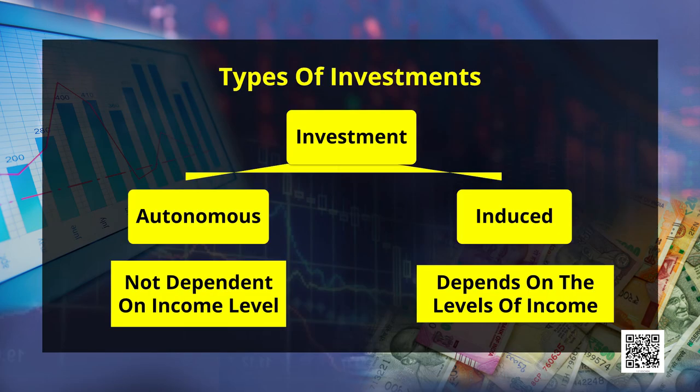To derive aggregate demand, the formula is: AD = Consumption + Investment. When we derive AD, it is always parallel to the consumption curve because the difference between them is investment, which remains constant at all levels. So generally AD will be an upward-sloping curve parallel to consumption. The slope of the consumption curve equals the slope of the aggregate demand curve. As consumption increases, aggregate demand also increases.